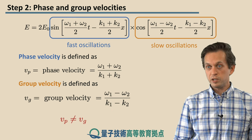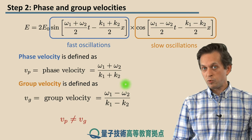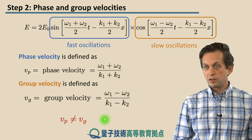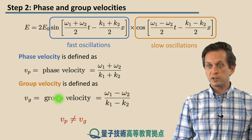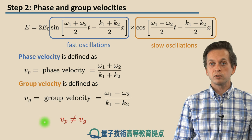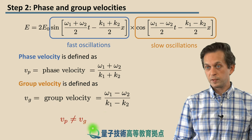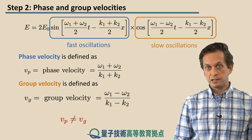So from this you can immediately see that even though we have a single superposition, there are these two notions of a phase velocity and group velocity which are not necessarily the same. They can be different, and we will see that later in this step.